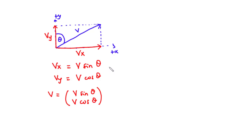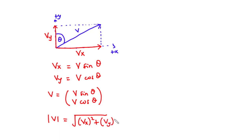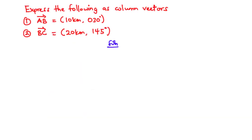Given a vector in magnitude and direction form, this is how to represent it in column vector form. The magnitude of the vector v is given by the square root of the horizontal component squared plus the vertical component squared. In the next section we are going to express certain vectors in column vector form — we have two vectors AB and BC represented in magnitude and direction form.